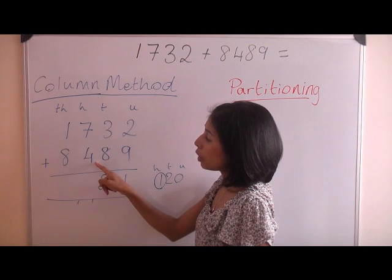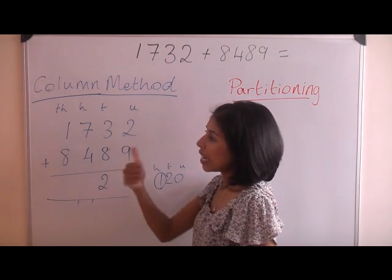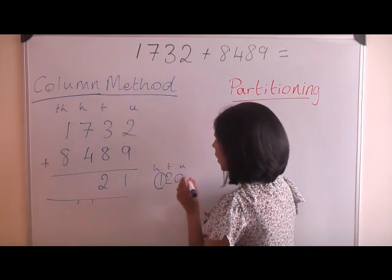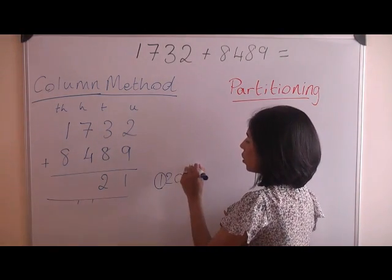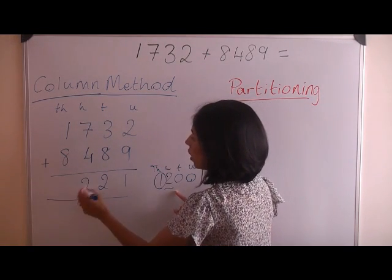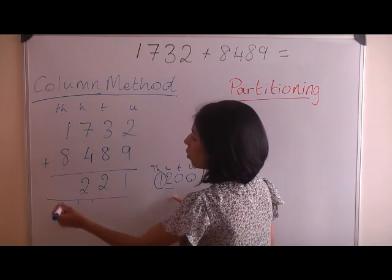Then we have 700 plus 400, that's 7, 8, 9, 10, 1100. Plus the 1, that's 1,200. So again, we have 1,200, our unit, 10, 100 and 1,000. We keep the 2 in the hundreds column and we carry the 1,000 over.